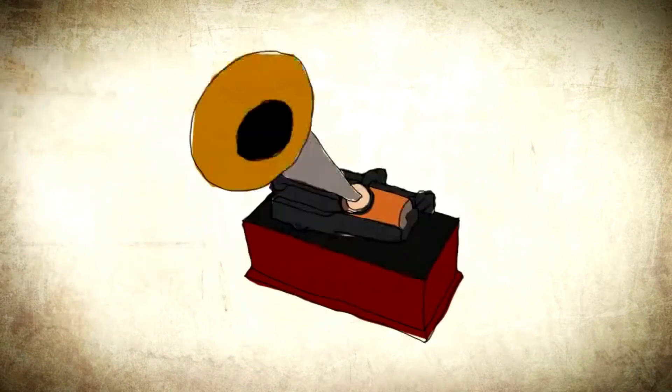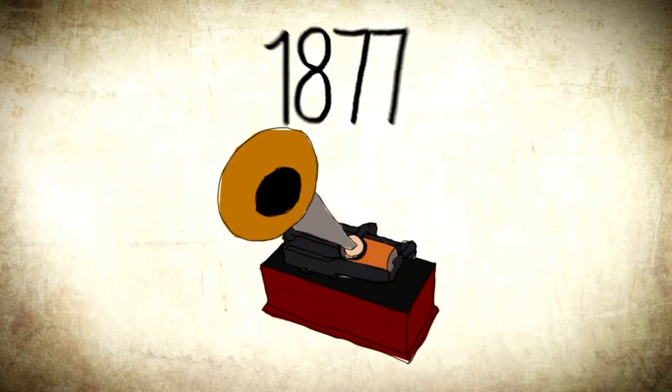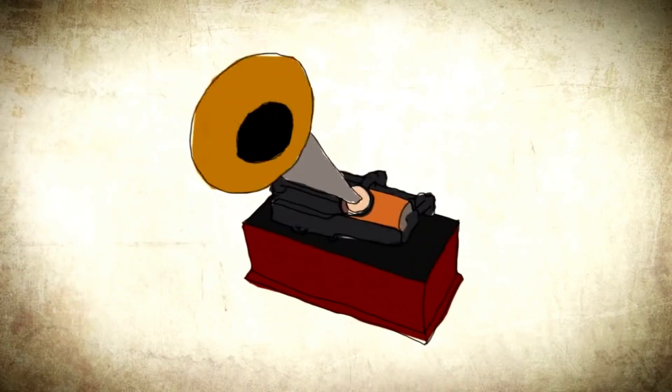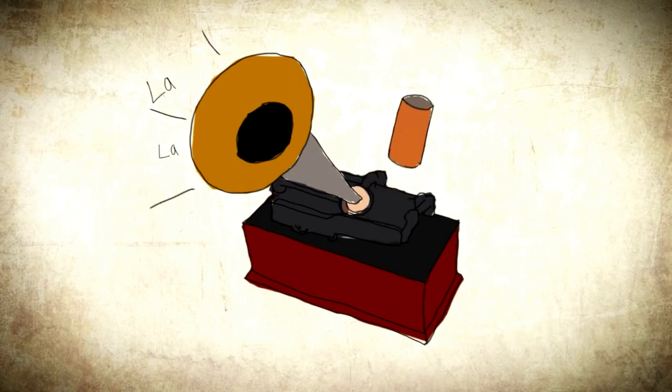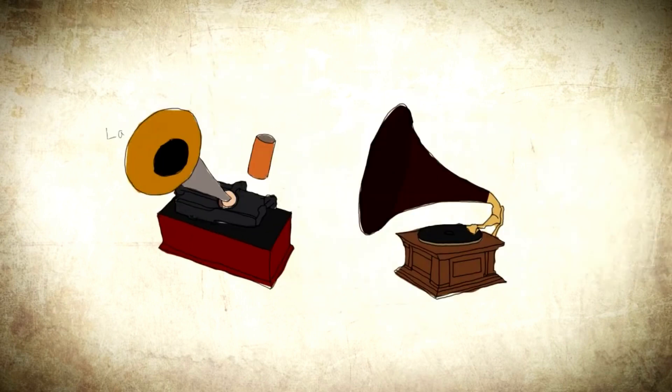Edison's first invention was a phonograph in 1877. Many people today incorrectly associate the phonograph with a record player. Edison's device recorded sound on cylinders and was geared as a recorder for the voice, not for recording and playing back music. It was the gramophone that recorded on discs and became the record player that we know today.